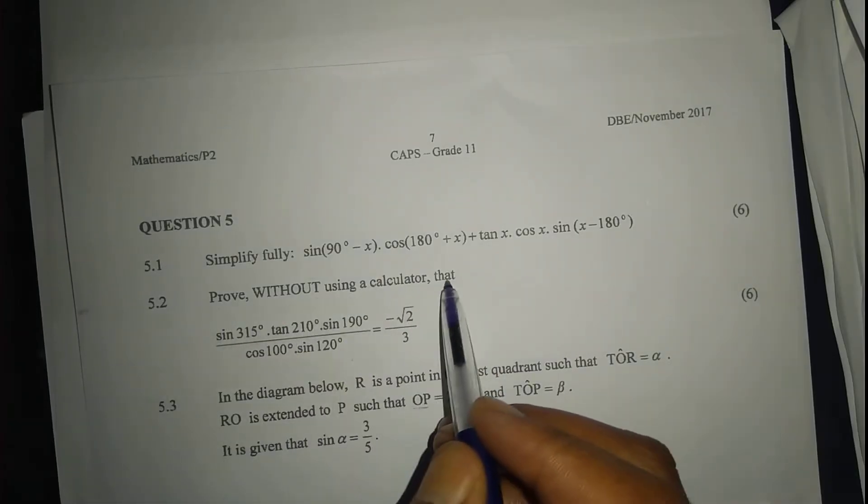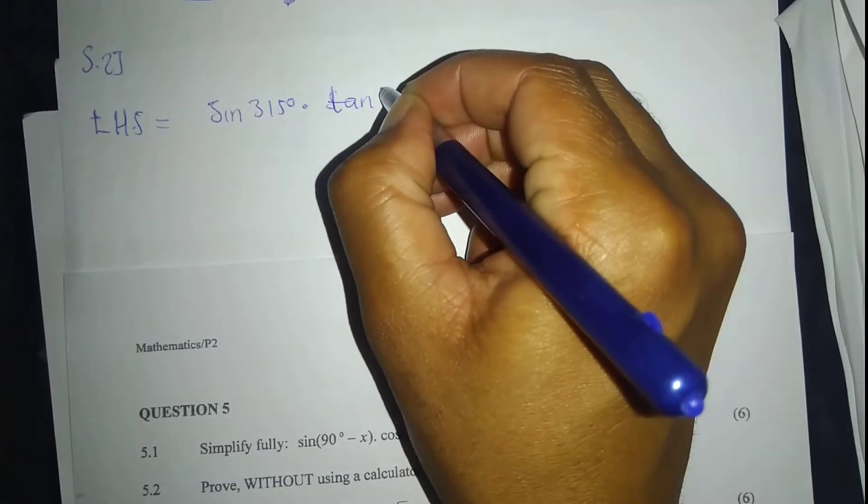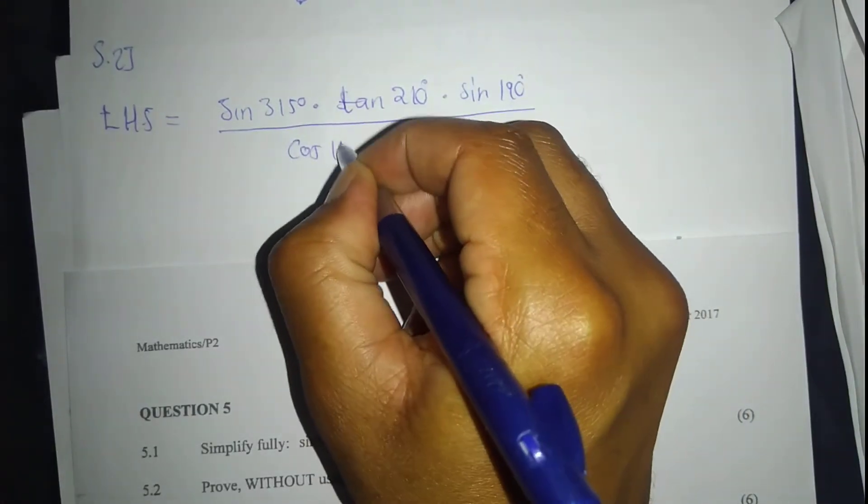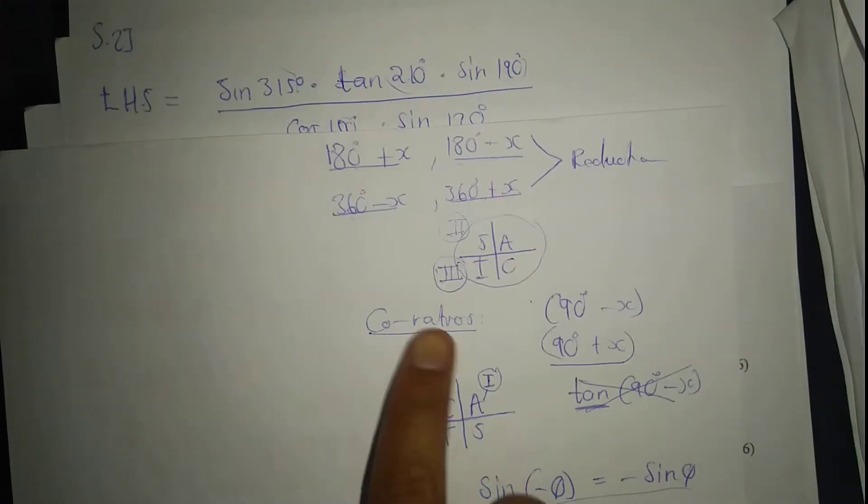For 5.2, we need to prove without using a calculator that the left hand side equals the right hand side. The left hand side is: sin 315° times tan 210° times sign 190°, divided by cos 100° times sin 120°. The angles are 315, 210, 190, 100, and 120 — these are obtuse angles which we need to reduce to acute angles using reduction formulas or co-ratios.